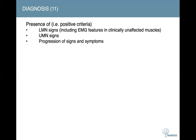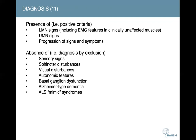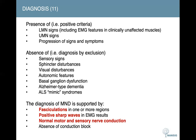Coming on to diagnosis: when it comes to motor neuron disease, there are findings to identify and findings to exclude. The positive criteria include lower motor neuron signs and/or upper motor neuron signs, and progression of signs and symptoms over time. You also want to confirm the absence of sensory signs, sphincter disturbances, and visual disturbances. To support the diagnosis, look for fasciculations in one or more regions, positive sharp waves in EMG results, and normal motor and sensory nerve conductions.